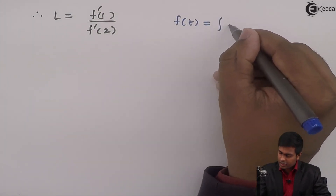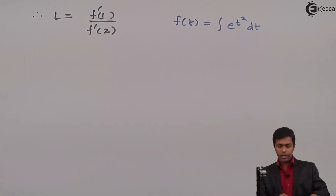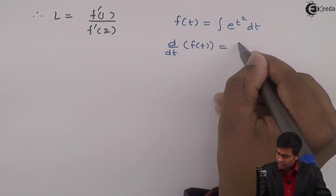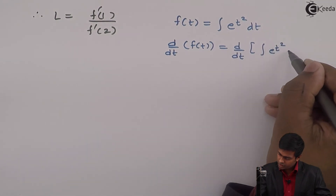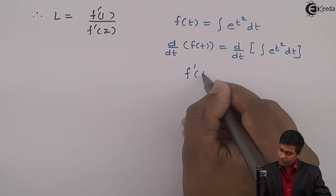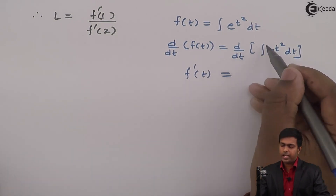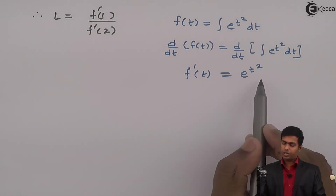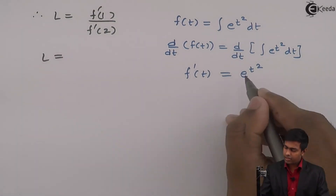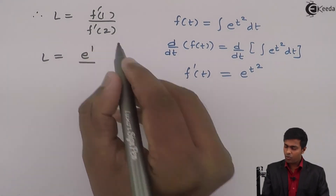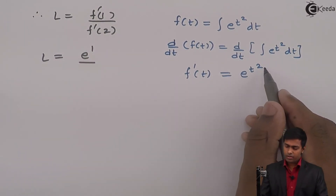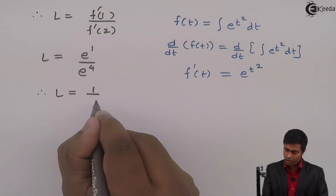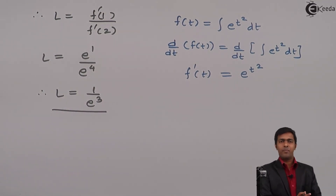We had considered f(t) = ∫e^(t²) dt. Taking the derivative on both sides, f'(t) = e^(t²), since the derivative and integration cancel as they are inverses. Substituting t = 1: f'(1) = e^(1²) = e¹. Substituting t = 2: f'(2) = e^(2²) = e⁴. Therefore L = e¹ / e⁴ = 1/e³. The value of the given limit is 1/e³. Thank you.